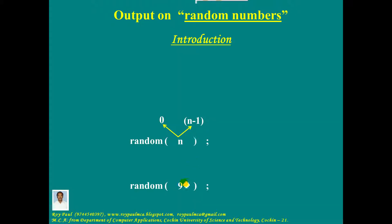For example, if I write random of 9, this function returns a number between 0 and 9-1, which is 8. 0 and 8 are included. Even 0 may come, even 8 may come. That is, if I write cout output operator random of 9, the answer will be a number between 0 and 8, both inclusive.